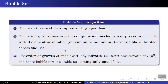Bubble sort is not a very efficient algorithm. The order of growth is quadratic, which in the worst case is O(n²). Because of this, it is not very useful for sorting a large number of elements, but it can be used efficiently for lists consisting of very few entries.